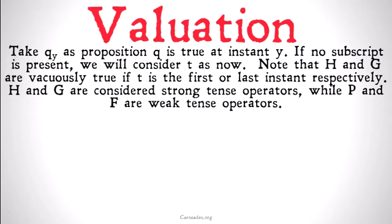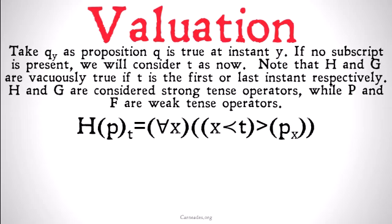With all of that information, let's look at how we can explain these tense operators in terms of precedence. So H(p)_t, basically it has always been the case that p for some given time t, means that for all x such that x is an instant in time and x is before instant t, x bears the precedence relation to t, that implies that p is true at x. For all instants such that that instant is before t, p is true at that instant. So has always been means that for all instants before this instant right now, p is the case. Once again, noting about vacuously true, if this instant right now is the very first instant in time, for all instants before this one p is true, of course, because there are no instants before this one.